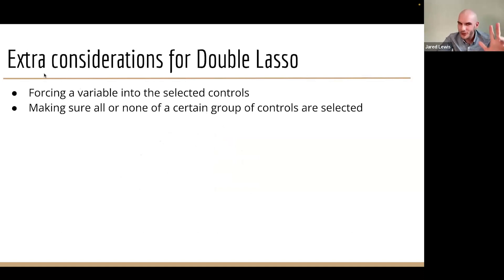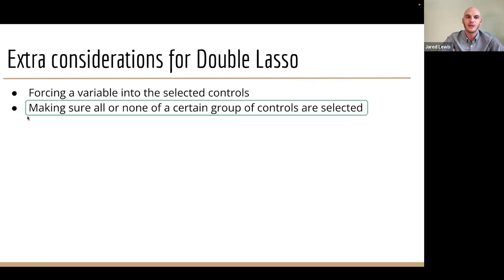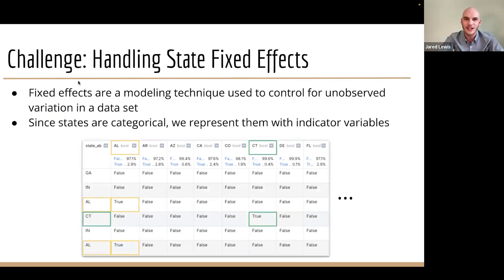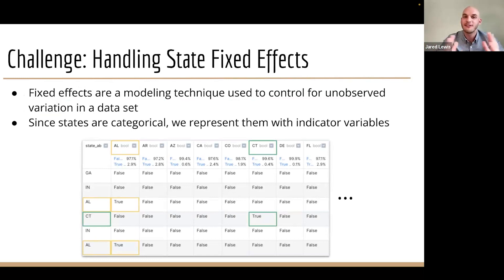Let's talk about a couple more extra considerations for double lasso. One is that sometimes you might want to force a variable into the selected controls — we didn't end up having to do that. But we did have to make sure that all or none of a certain group of controls were selected. This applies to handling our state fixed effects. Fixed effects are a modeling technique used to control for unobserved variation in a dataset. Different states have implemented different COVID guidelines and policies, and you want to control for that even though it's difficult to measure.